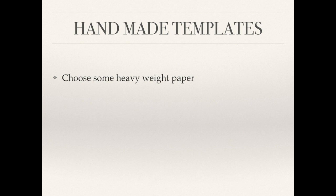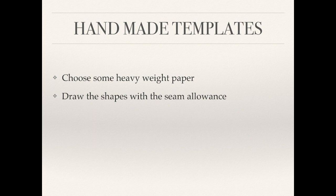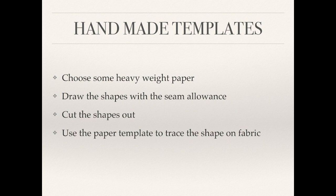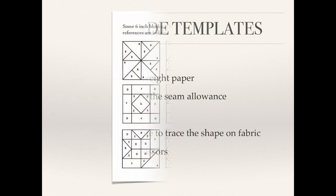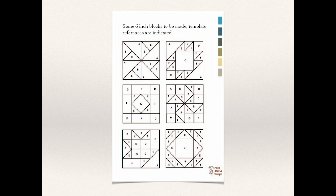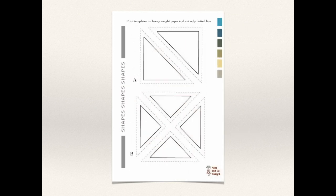What about blocks? You can have handmade templates. You choose some heavyweight paper, draw the shapes with the seam allowance, cut the shapes out, use the paper template to trace the shape on the fabric, and then cut the fabric with scissors.